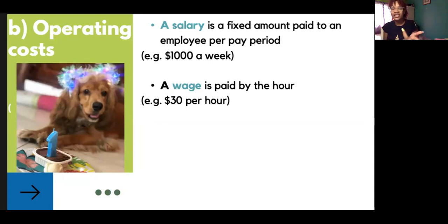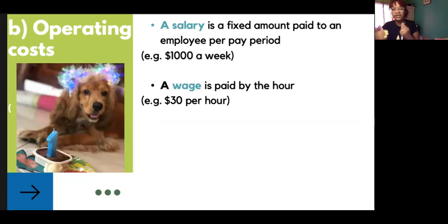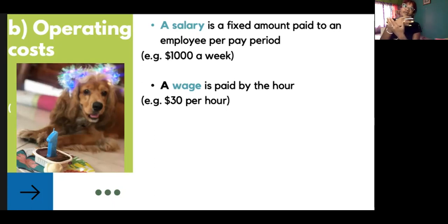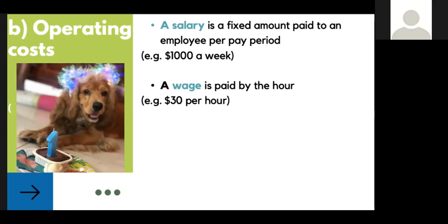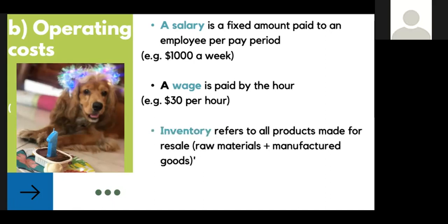But if you work two hours on a wage, you'll get $60. So that's the main difference. And these, of course — we're talking about operating costs — are the costs that keep your business open on a day-to-day basis, because you have to pay your staff in order for your business to run.